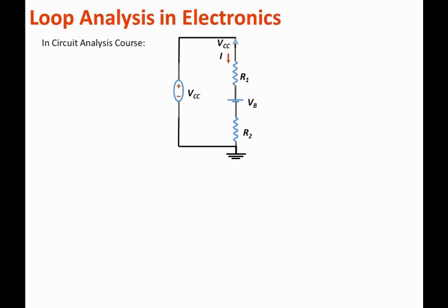So if we come to the voltage source Vcc, the current enters the negative polarity, which means we subtract this voltage source. The current enters the top of resistor R1, so by Ohm's law the plus polarity is on top, and we add the voltage across R1. Similarly, the plus polarity of Vb is on top, so we add Vb. Note that Vb is not a voltage source — it is a constant voltage drop that models some electronic circuit elements, such as 0.7V or 0.5V.